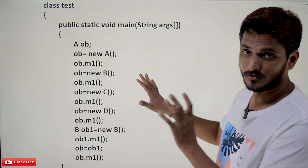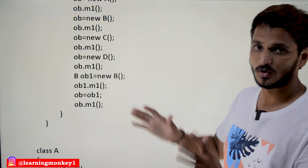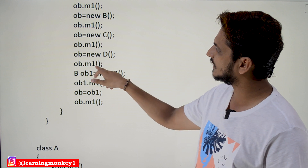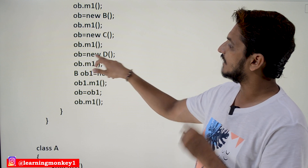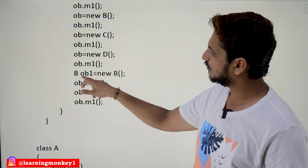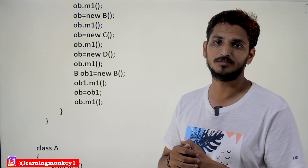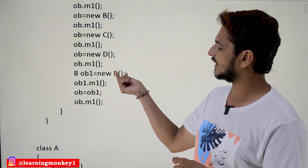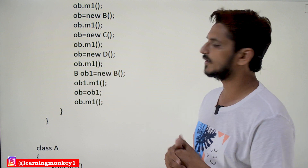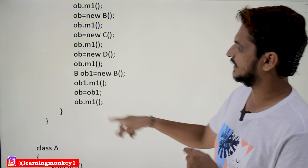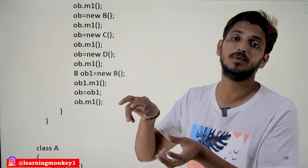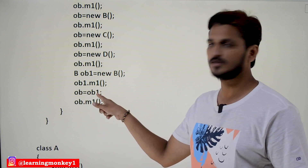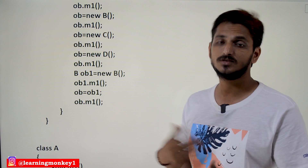This is the concept of runtime polymorphism. There is one more important thing to understand. OB.M1() here means OB is referencing to M1 in class D. We also create OB1 = new B() — OB1 references the object of class B. OB1.M1() calls M1 from class B. Then OB = OB1 is accepted, because OB is a superclass reference variable and a superclass variable can reference a subclass object.